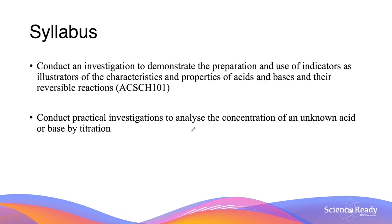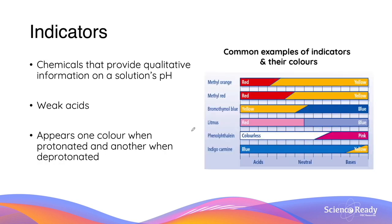Here are our syllabus dot points. So what are indicators? Many of you would have learnt about indicators in Stage 5, and basically what you would have understood them to be are chemicals that, when added to a liquid, will tell you the range of the pH. Indicators are chemicals that provide qualitative information on a solution's pH, and they do this by changing colour. They're normally weak acids, and they appear one colour when deprotonated and another when protonated, which is why they're effective at telling us the pH.